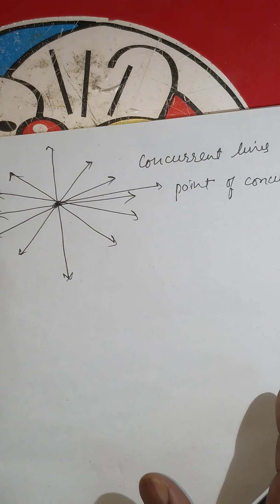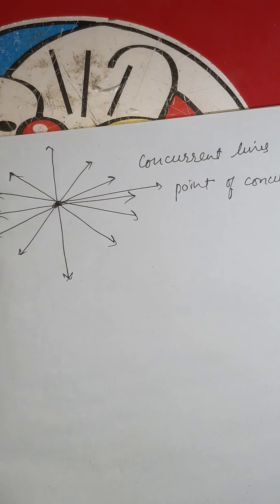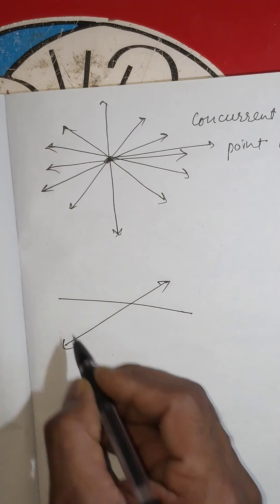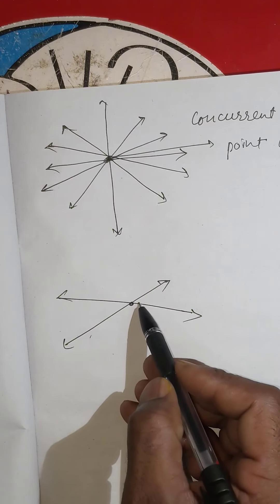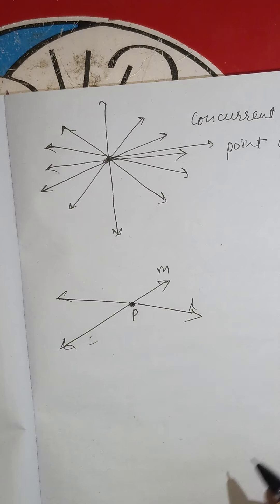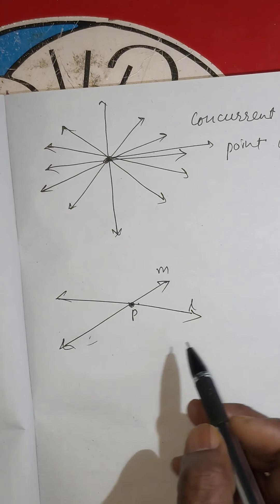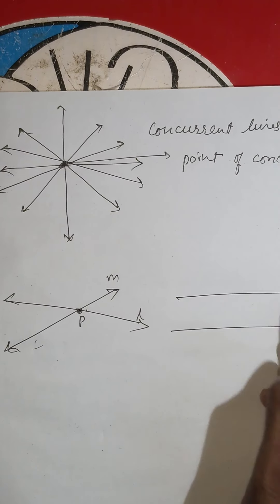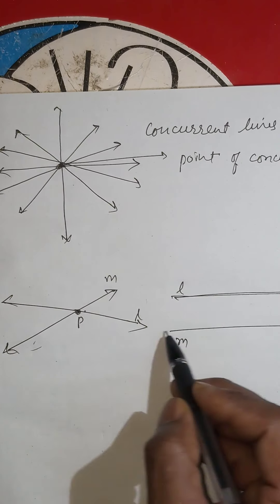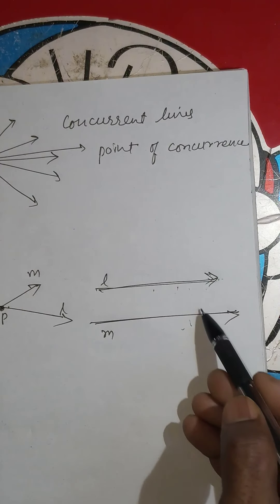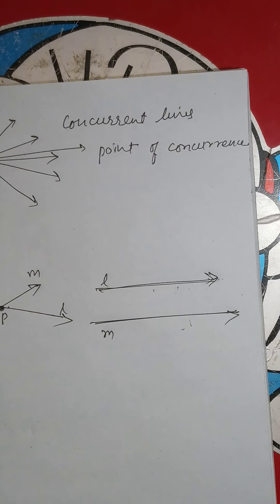The second property is that two different lines in a plane can either intersect at a point or be parallel to each other. If they intersect, they cross each other at a single point — for example, lines L and M intersecting at point P. If they are parallel, they never meet each other, like railway tracks.